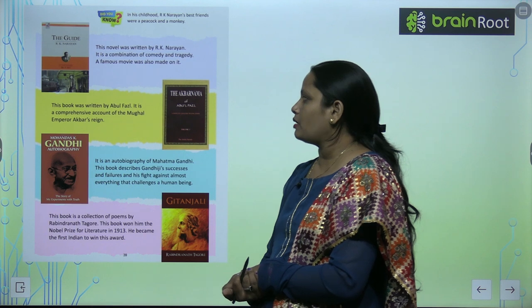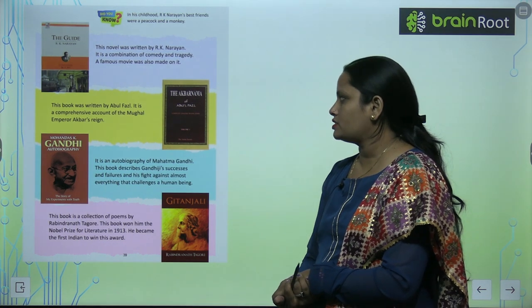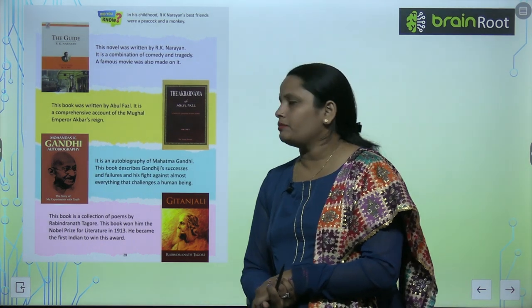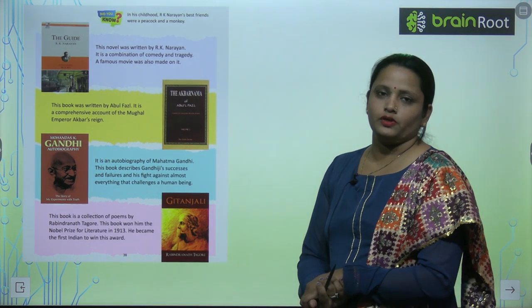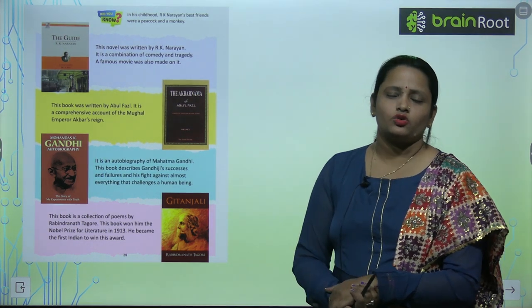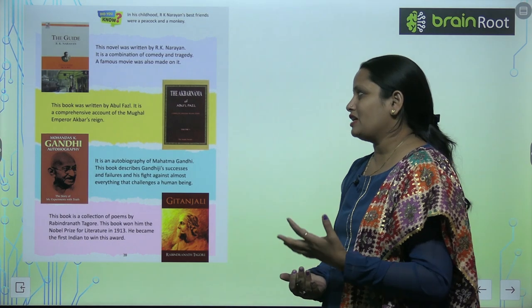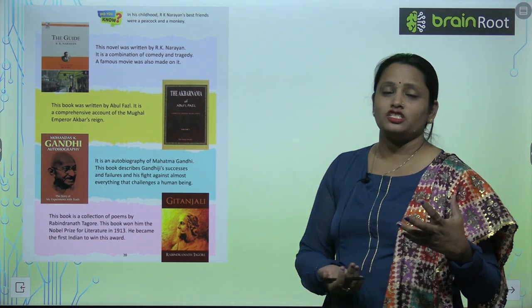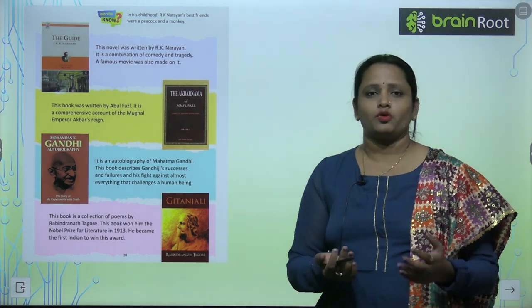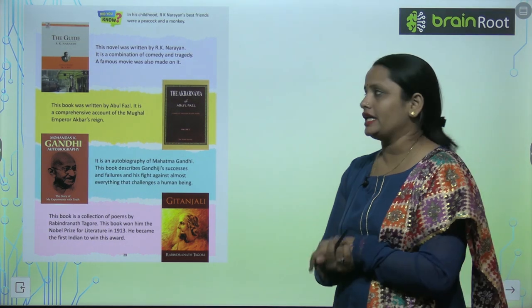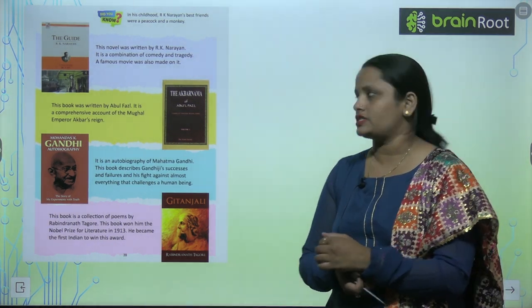Next is Akbar Nama by Abdul Fazal. This book is a comprehensive account of Mughal emperor Akbar's reign. Mughal emperor अकबर के time में उनके राज में क्या-क्या चीज़ें हुई थीं उन सब को इस book में लिखा गया, और लिखा किसने? Abdul Fazal ने।